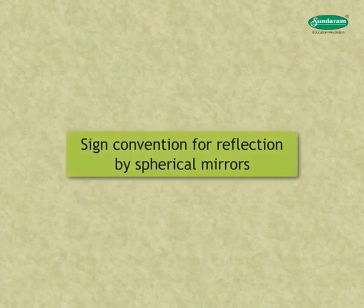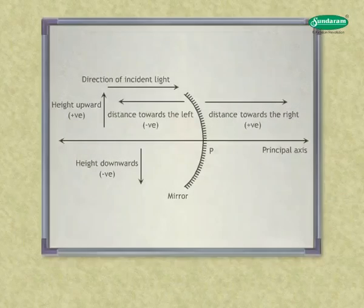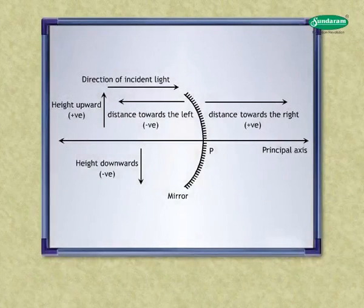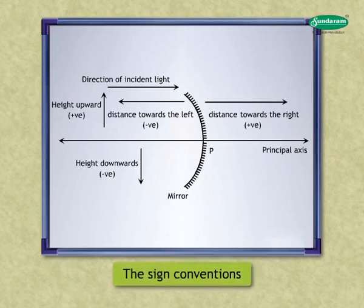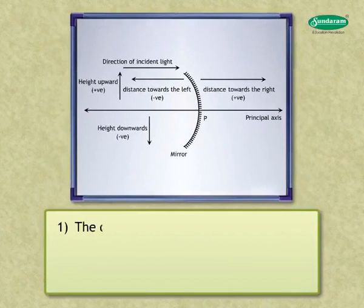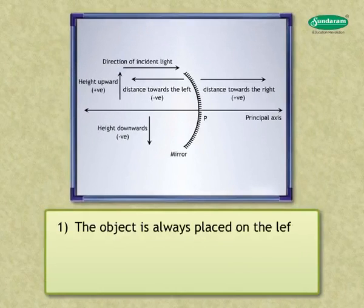Let us look at the sign convention for reflection by spherical mirrors. According to the new sign convention, the pole P of the mirror is taken as origin. The principal axis is taken as x-axis of the coordinate system. The sign conventions are as follows: One, the object is always placed on the left of the mirror. Two, all distances parallel to the principal axis are measured from the pole of the mirror.